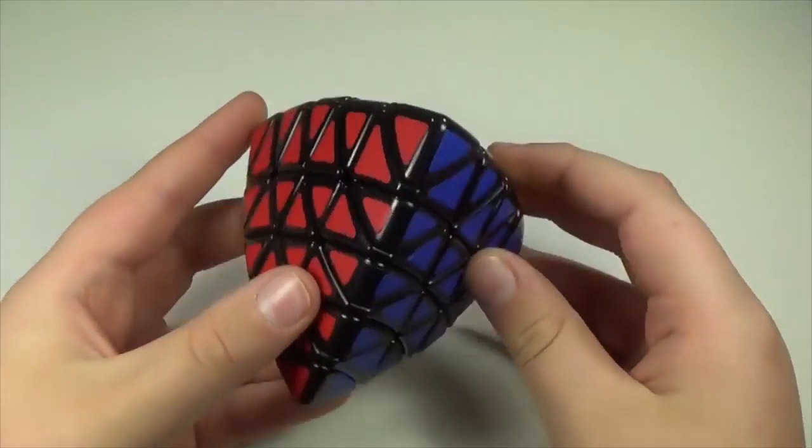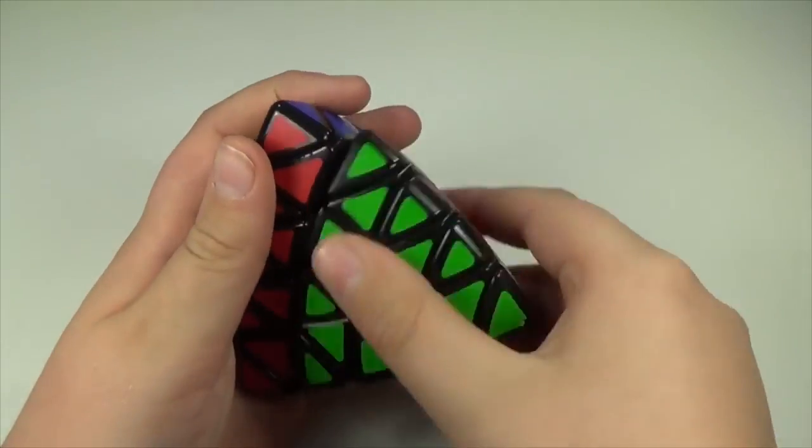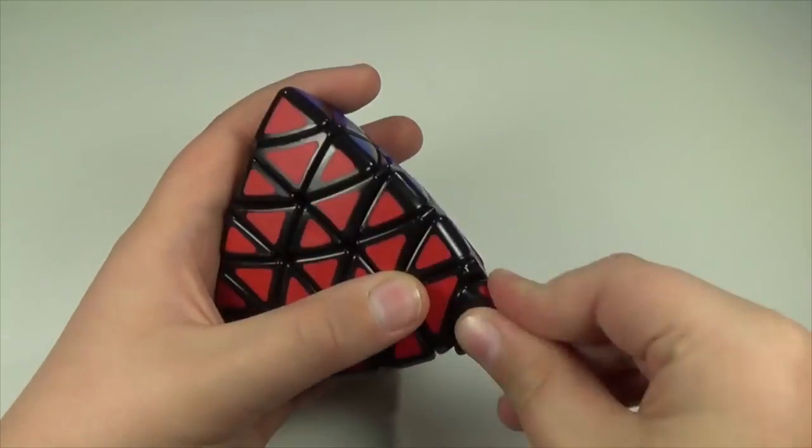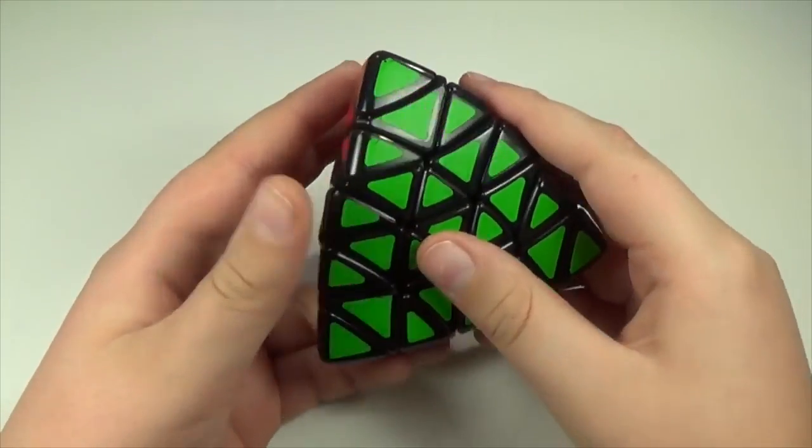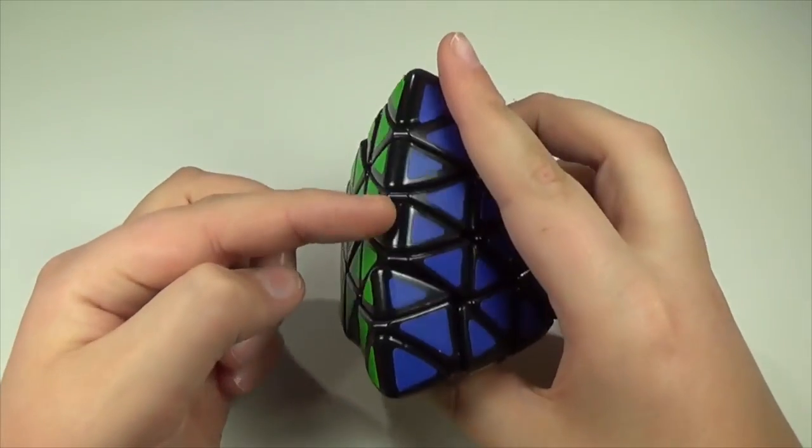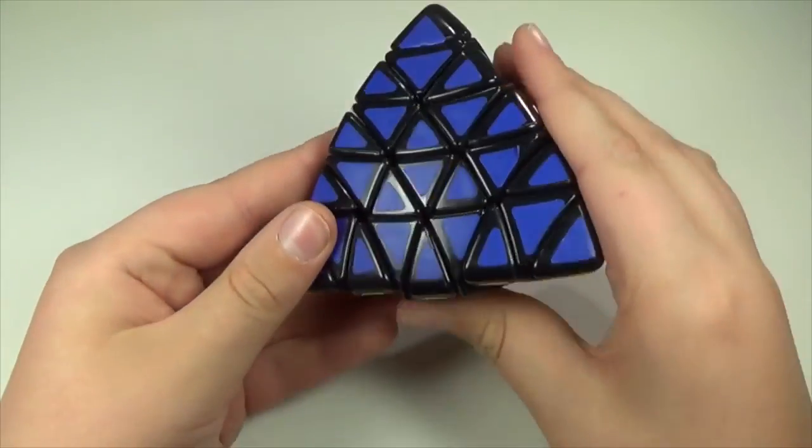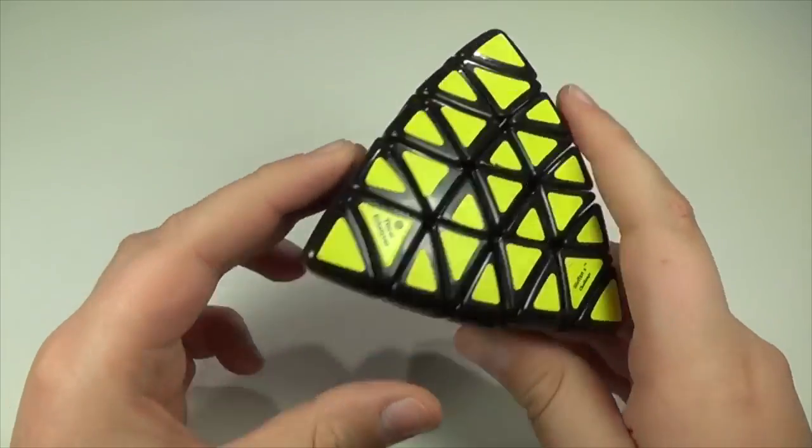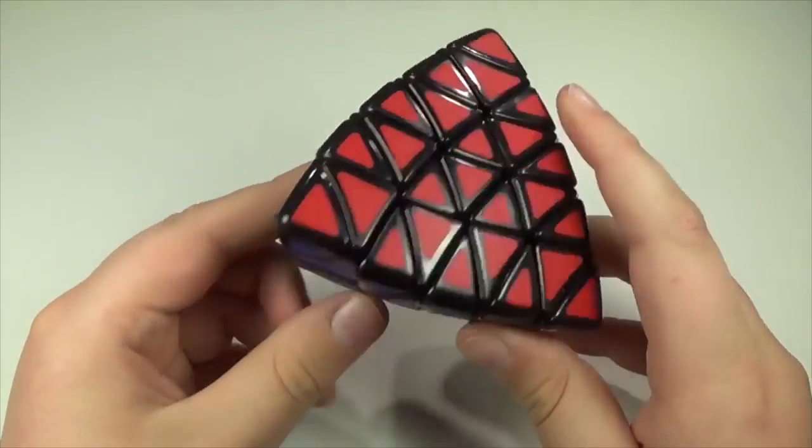Next, we have the Professor Pyraminx. This is pretty much a 5-layered Pyraminx, including the tip. The solve is pretty much reduction. You solve the centers, then the edges, then you solve it like a master Pyraminx. The stickers are weird and poorly placed, but it doesn't affect me too much.